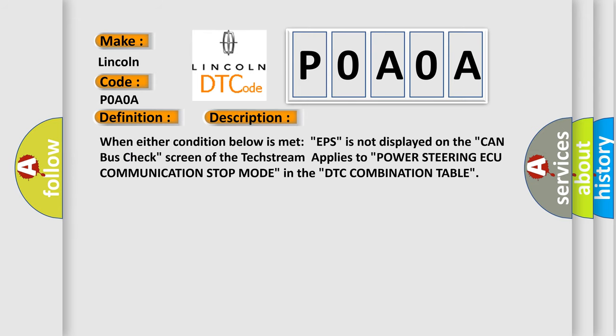When either condition below is met, EPS is not displayed on the CAN bus check screen of the tech stream, applies to power steering ECU communication stop mode in the DTC combination table.